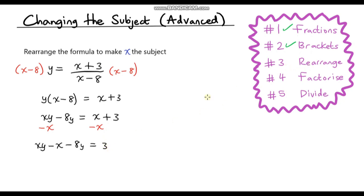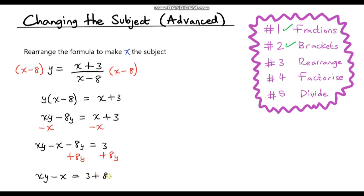We just need to get rid of this negative 8y because we want only x's on the left. So I'm going to add 8y to both sides. Now we're left with xy minus x on the left. Those terms cancel, and on the right hand side we've got 3 plus 8y. Now we're done with rearranging because we've just got x's on the left hand side.